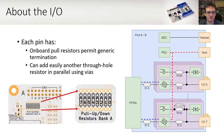For example, to increase the pull up strength, you can add a 3.1k resistor in parallel with the onboard 10k to get approximately 2.4 kilo ohm of pull up, which is ideal for a strong I2C pull up.